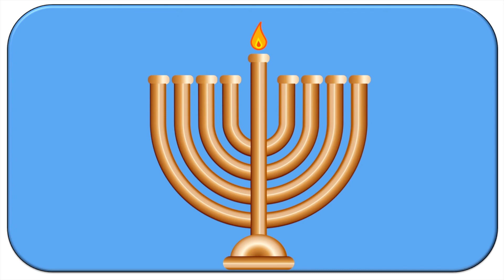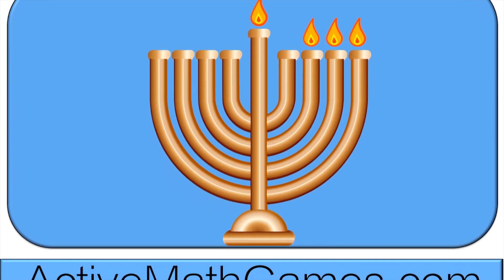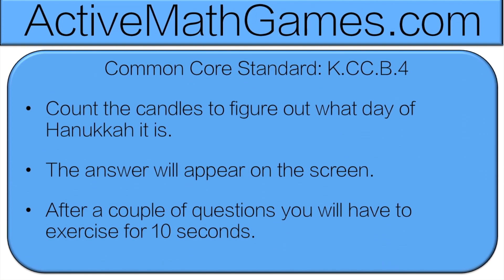On the first night of Hanukkah, we use the middle candle to light one other candle. On the second night of Hanukkah, we use the middle candle to light another candle. And the third night, we use the middle candle to light another candle. That continues each day until the 8th day of Hanukkah when all the candles are lit.